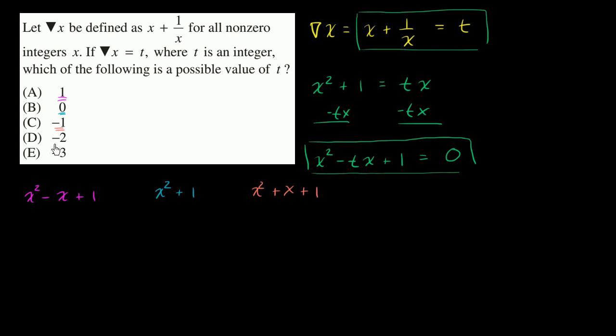If t is equal to negative two, then you get x squared plus two x plus one.